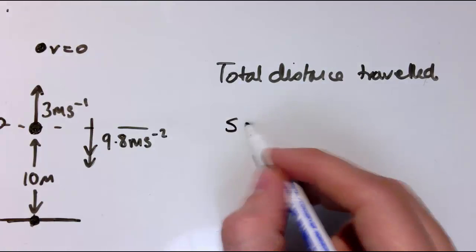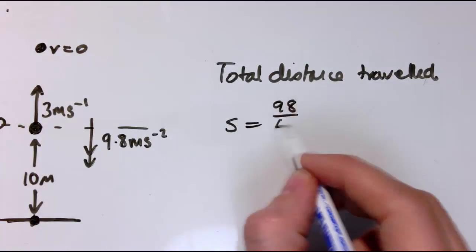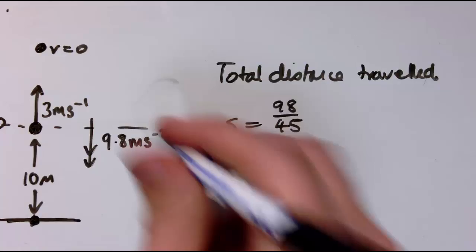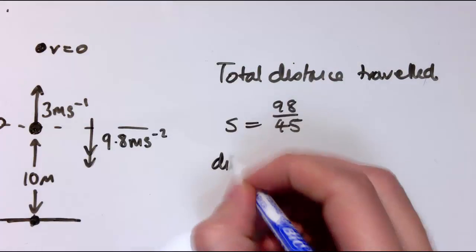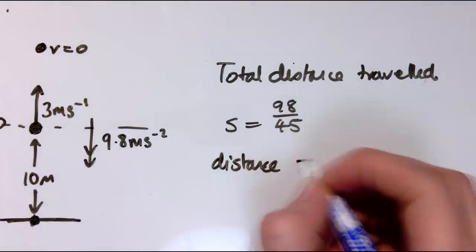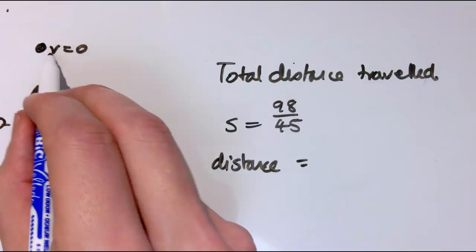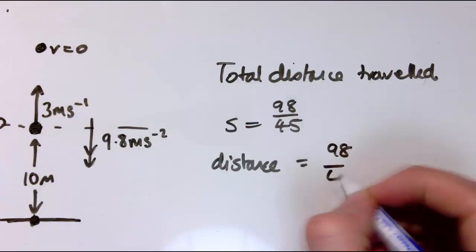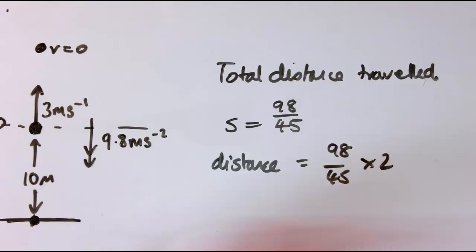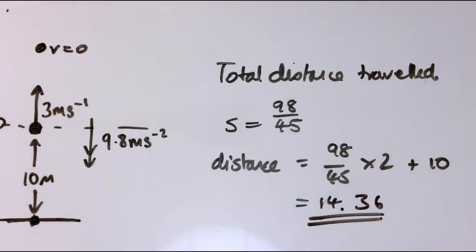And we found before that that was 98 over 45, so actually the distance travelled is going to be 98 over 45 going up, plus 98 over 45 coming down here, so two of those, and then this 10 metres down here. Which gives 14.36 if I rounded off metres in total.